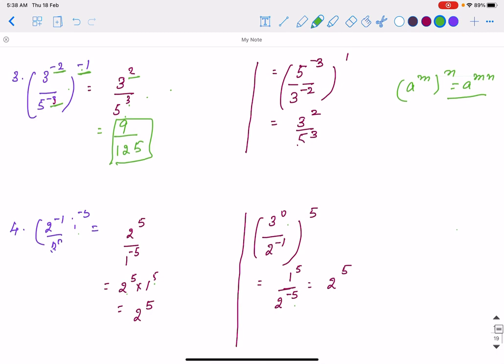Other method is, again, we take the reciprocal. Reciprocal means 5 to the power minus 3 will be in numerator, 3 to the power minus 2 will be in denominator. Now again, it is negative power here also. So if we change its position, numerator to denominator, power will be positive. Again minus 2, if we change it, power will be positive. Both ways you are getting same answer.